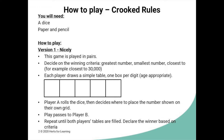Player A then rolls the dice and decides where to place the number shown on their own grid. The dice then passes to Player B, and players repeat like this until either both tables are filled, or it becomes clear that one player has won before the tables are filled. You'll see an example of that in the clip coming up.